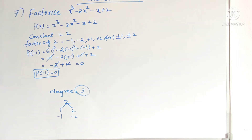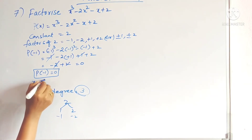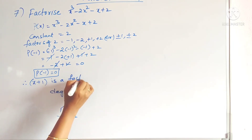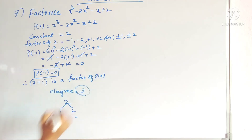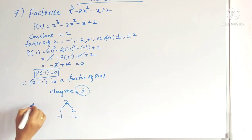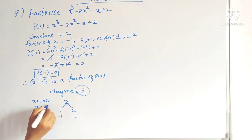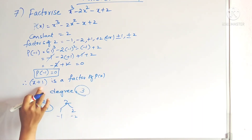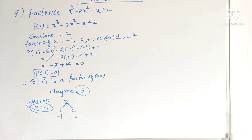Since the remainder is 0, x plus 1 is a factor of p(x). Since p of minus 1 equals 0, that means when x plus 1 equals 0, x value is minus 1. So x plus 1 is the factor of p(x). Among the 3 factors, we found out 1 factor, and we have to find the remaining factors. For that, we have to do the division of polynomials.